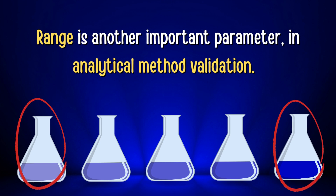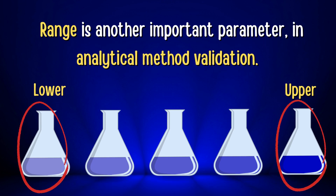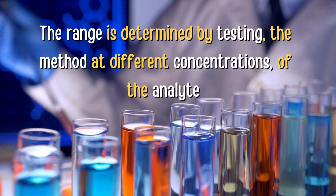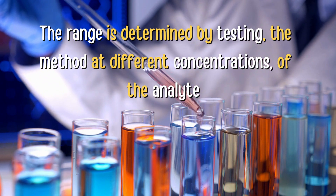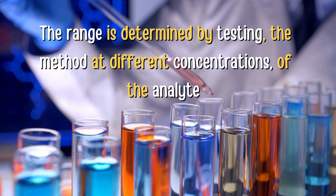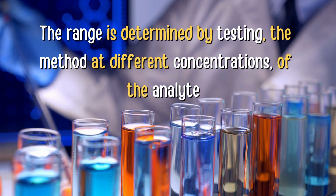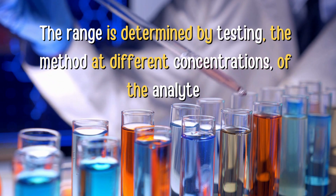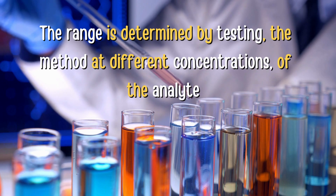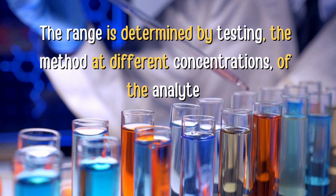Range is another important parameter in analytical method validation. It refers to the interval between the upper and lower levels of analyte that have been demonstrated to produce a suitable level of precision, accuracy, and linearity. The range is determined by testing the method at different concentrations of the analyte to determine the upper and lower levels of quantification, ensuring the method can measure the analyte over a specified concentration range.